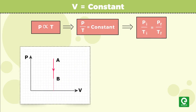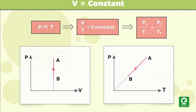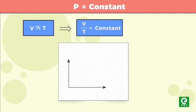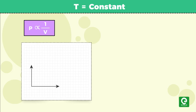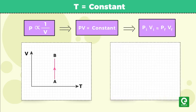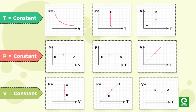This is called PT diagram. Similarly, by keeping P constant we get VT diagram, and keeping T constant we get a PV diagram. Since all three variables P, V, and T are interdependent, we can draw all three diagrams if either one is given.